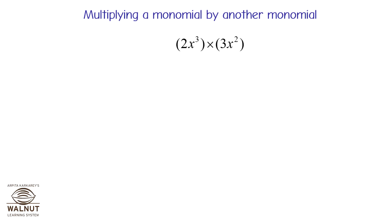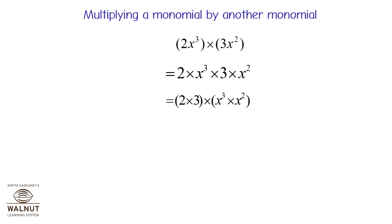Multiplying a monomial by another monomial: 2x cubed multiplied by 3x squared is equal to 2 into x cubed into 3 into x squared, which is equal to 2 into 3 into x cubed into x squared, which is equal to 6 into x raised to 3 plus 2, which is equal to 6x raised to 5.